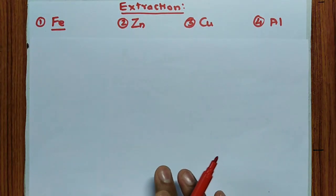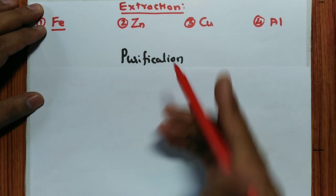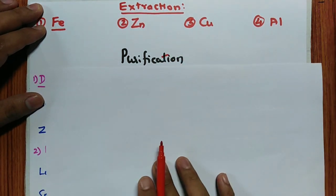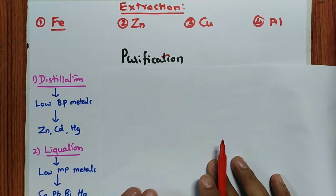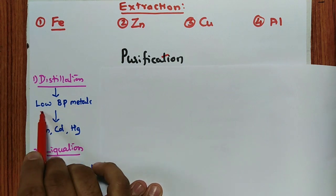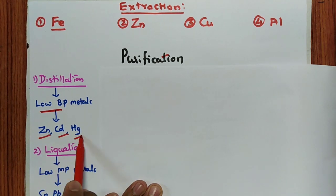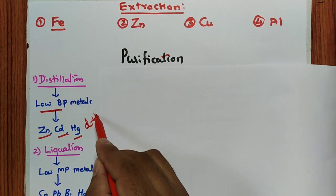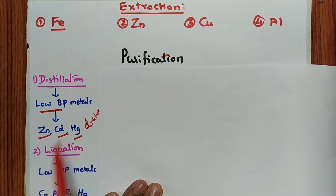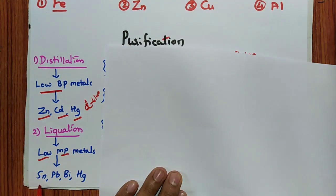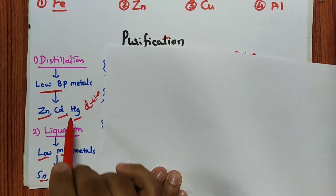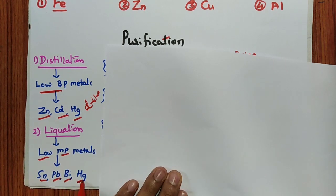The last step is purification. First method: distillation — used for low boiling point metals — examples: zinc, cadmium, mercury (all D-block elements). Second method: liquation — used for low melting point metals — examples: tin, lead, bismuth, mercury (P-block elements). Mercury belongs to both distillation and liquation.